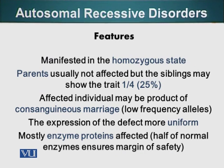We already know what that means. Parents of an affected person are usually not affected. However, the probability that this particular disease or trait will appear in the siblings of that person is 1 in 4, or 25 percent.